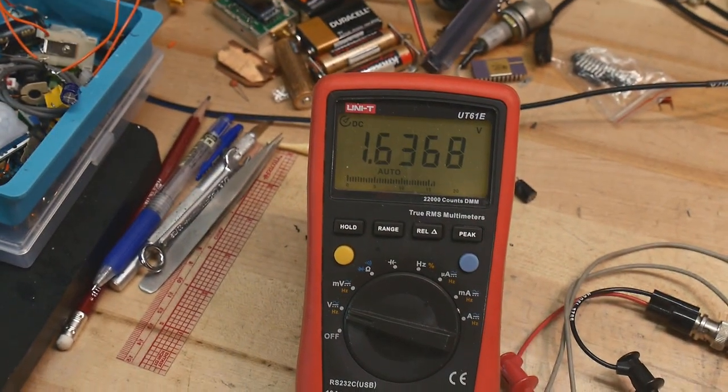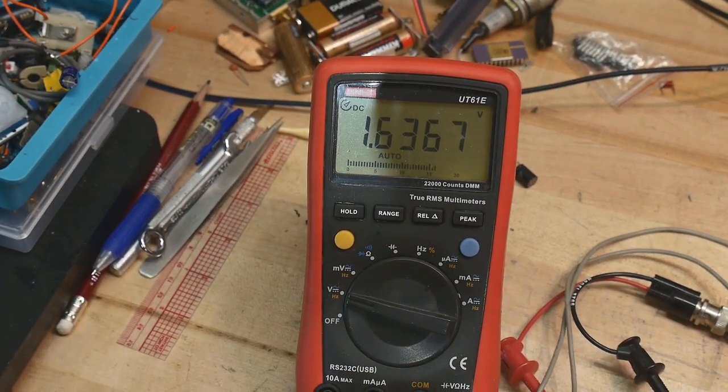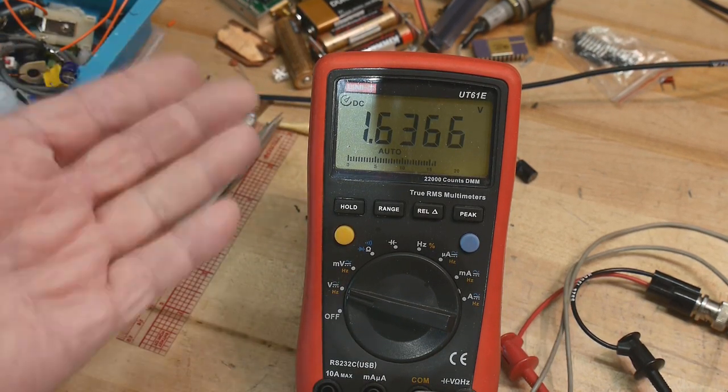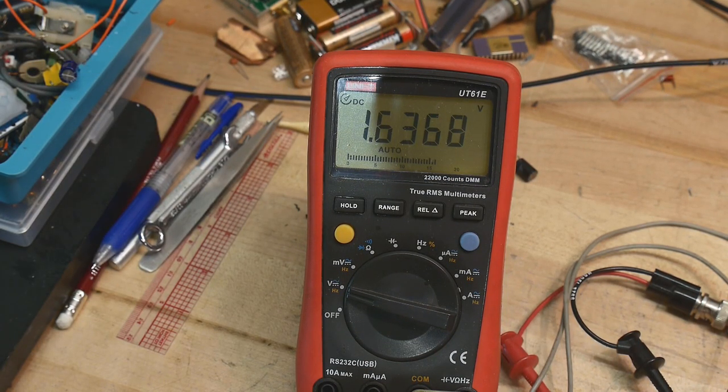All right, so what do we have? We have 1.6. So we have 1.13 plus 0.6, and we're getting about 1.6. That's about right. That's DC.